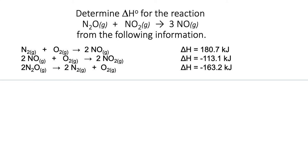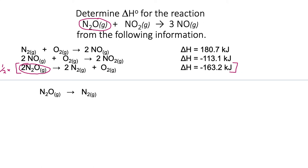I start on the left-hand side of the target equation. We have N2O gas—looking through the possible equations, one contains N2O gas, so I will use that. But I only want one N2O, and this equation has two. So I multiply everything by one half: half of 2N2O is N2O, half of 2N2 is N2, and half of one oxygen gas is half an oxygen gas. The enthalpy is then half of the original: negative 81.6 kilojoules.